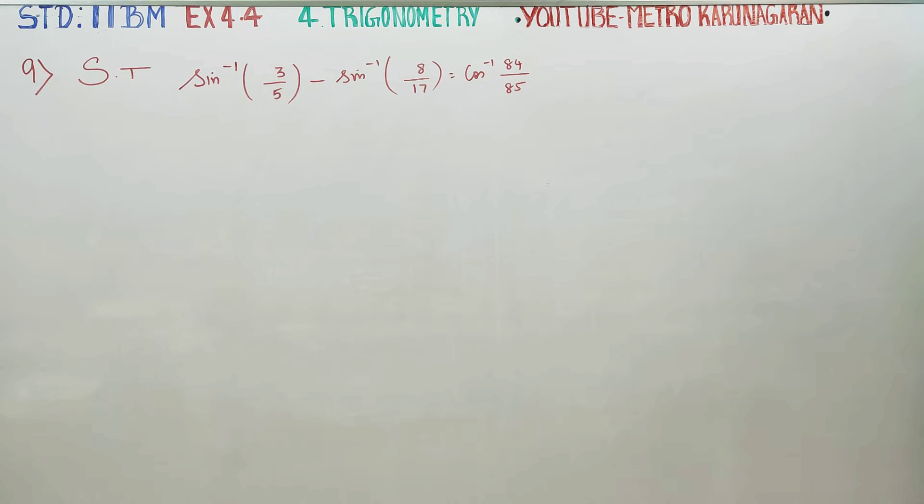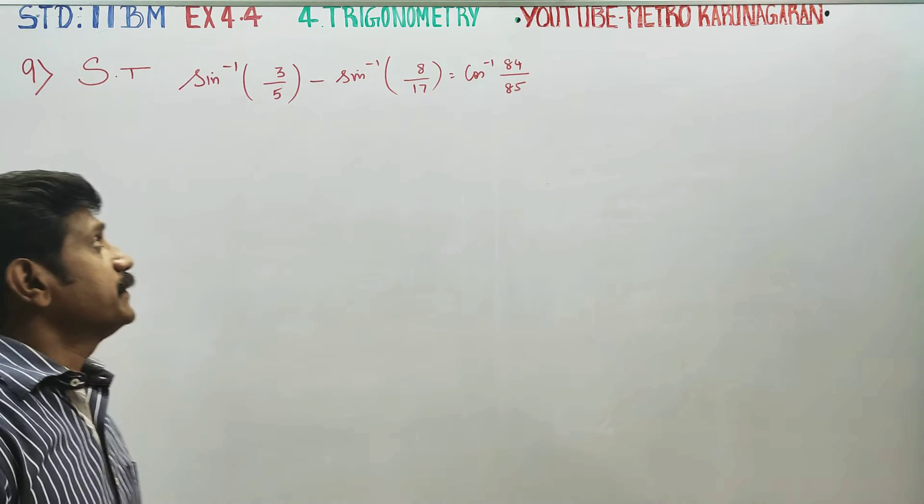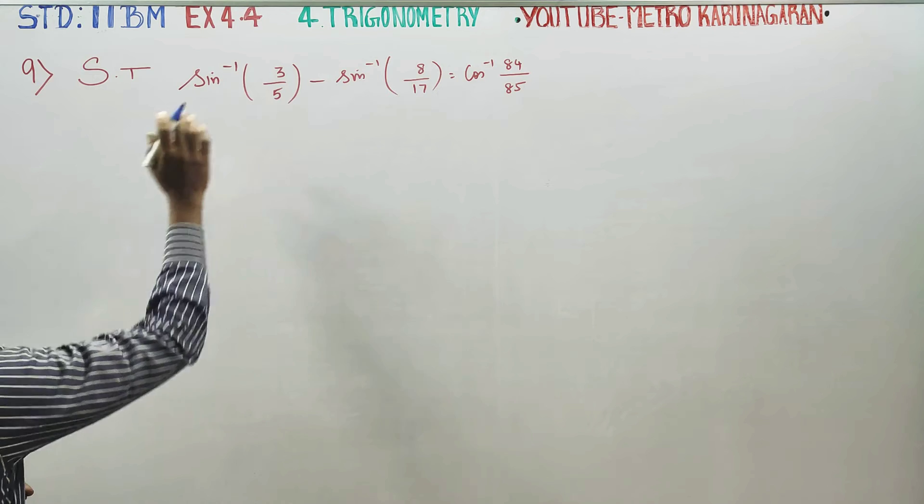Dear 11th standard business maths students, I am Etro Karanagaran. In exercise number 6.4, sum number 9, you have to show that sin inverse of 3 by 5 minus sin inverse of 8 by 17 is equal to cos inverse of 84 by 85. Now I have to show that problem.